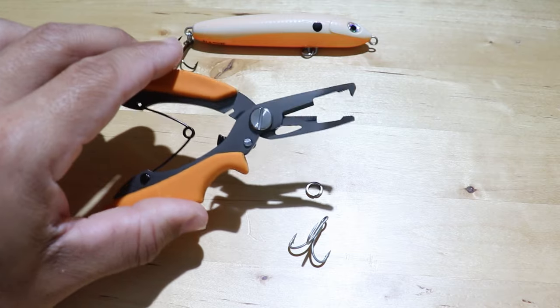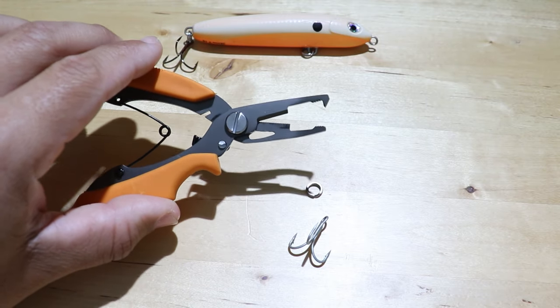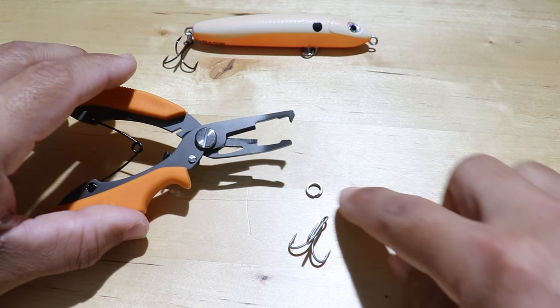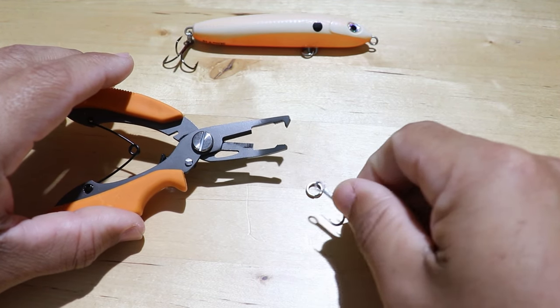Also you will notice these pliers are pretty small and compact. You don't want to go with a bulky pair of split ring pliers because you're working with pretty small split rings and hooks.